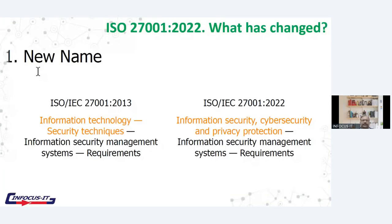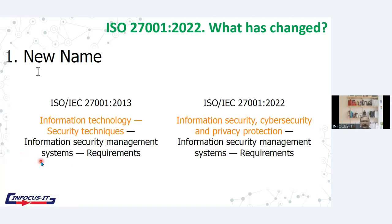The first change is the name. Earlier in the 27001:2013 version, the name was 'Information Technology — Security Techniques — Information Security Management System Requirements.' This was the earlier name. Now in the new version the name is also changed and the changes are reflected in orange color.